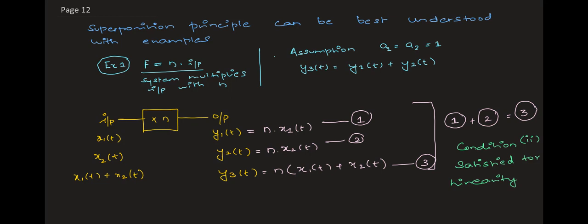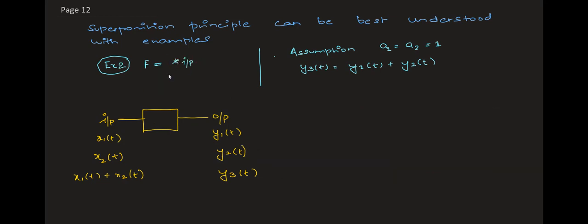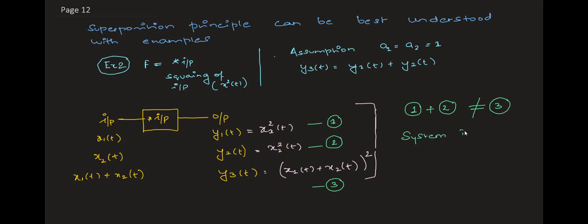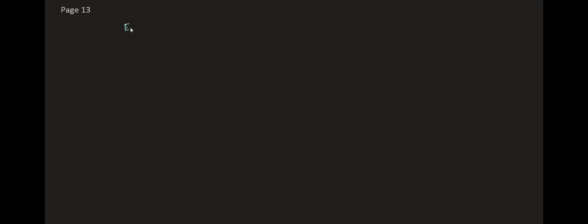Next, we look at a system that squares its input. Here y1(t) = x1²(t), y2(t) = x2²(t), and y3(t) = (x1(t) + x2(t))². It is clear that 1 plus 2 does not equal 3, because (x1 + x2)² has an extra component 2·x1·x2 which is not present in y1 + y2. So this system doesn't satisfy the superposition condition and hence it is non-linear.